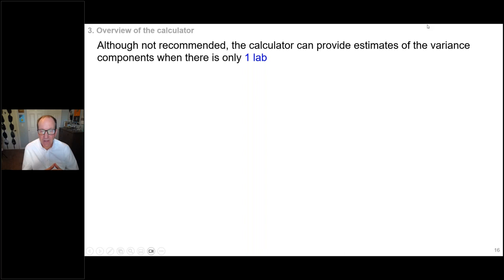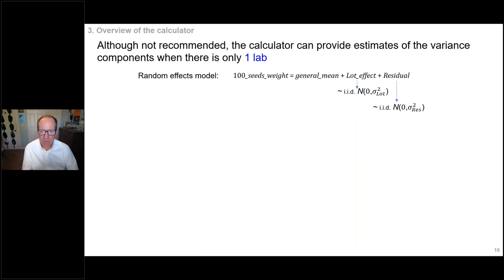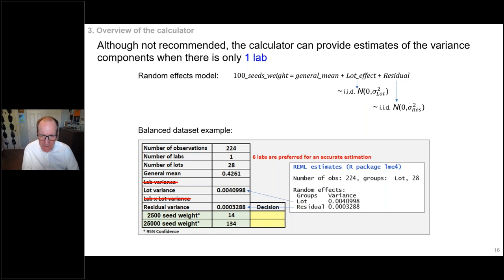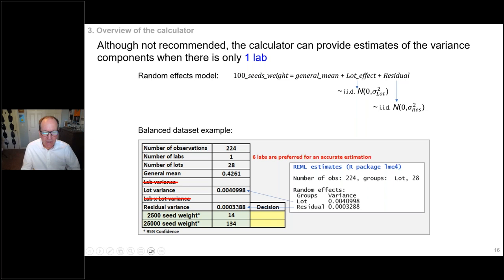While we don't recommend using the calculator for a single laboratory, the calculator will still work in that case. The purity committee and statistics committee may give exceptions for particular species. For the single-lab case, you get the random effects model with the general mean, a lot effect, and the residual only — no lab variance or lab-by-lot variance, as those are not estimable with a single lab. The output shows the general mean, the lot variance, and the residual variance.